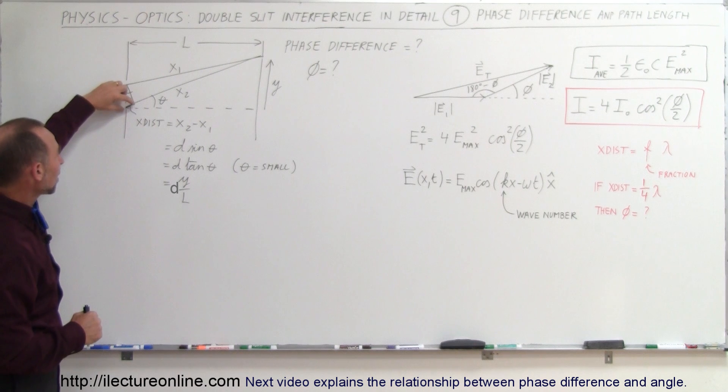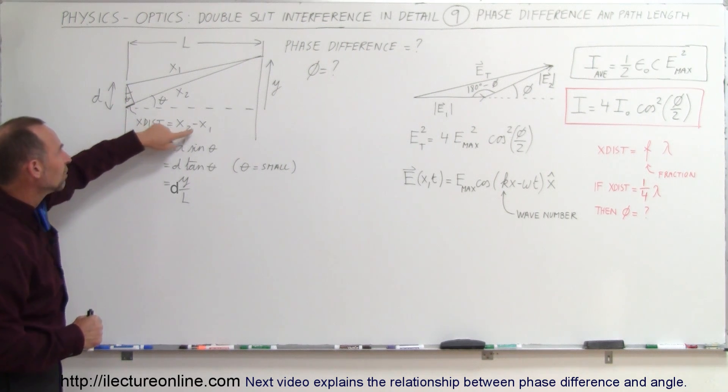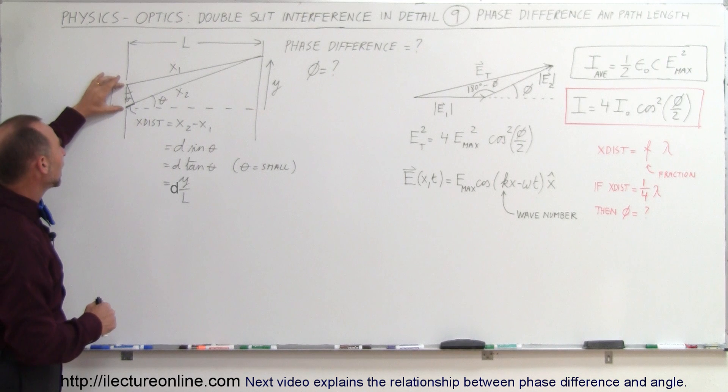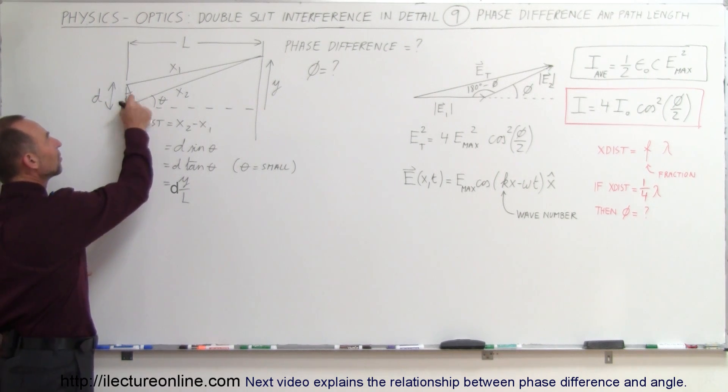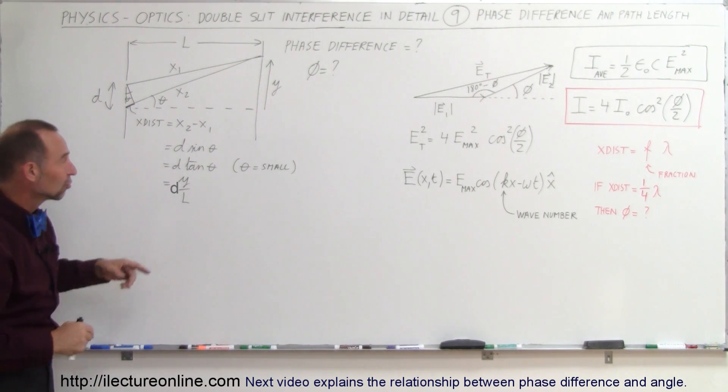The extra distance traveled by the second wave is defined as x2 minus x1, which equals the hypotenuse of this triangle—the distance between the two slits d—times the sine of the angle theta, because that gives us the opposite side to the angle.